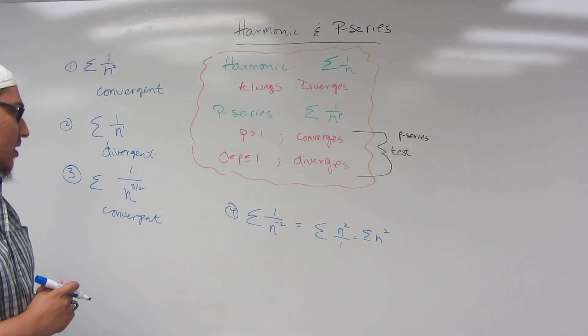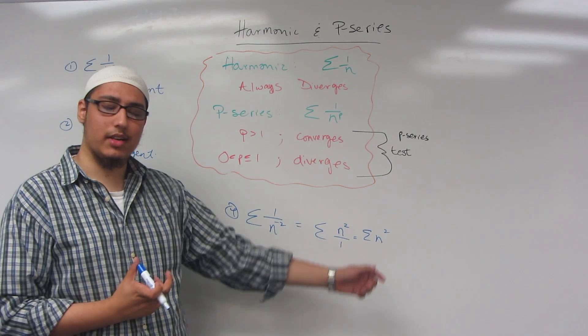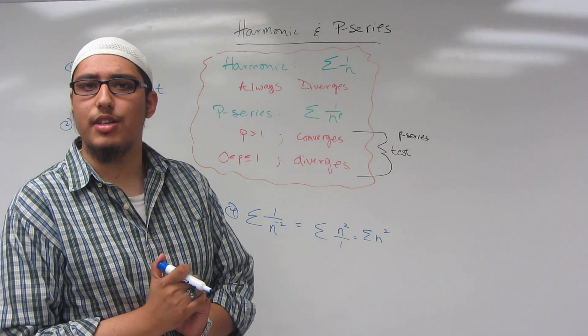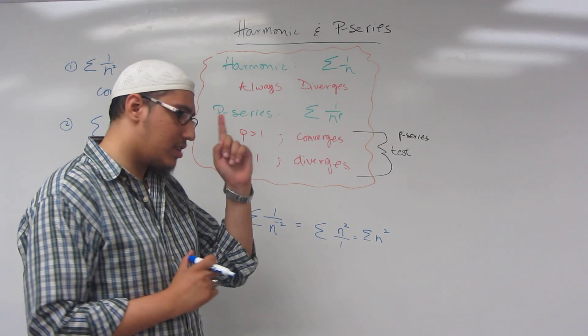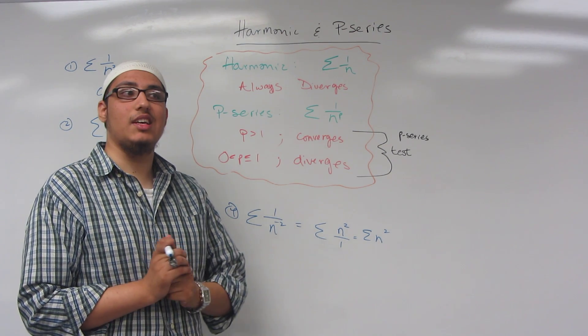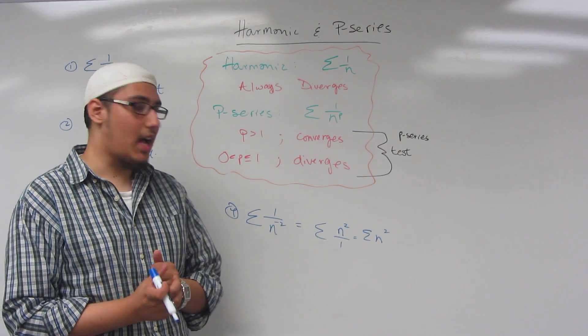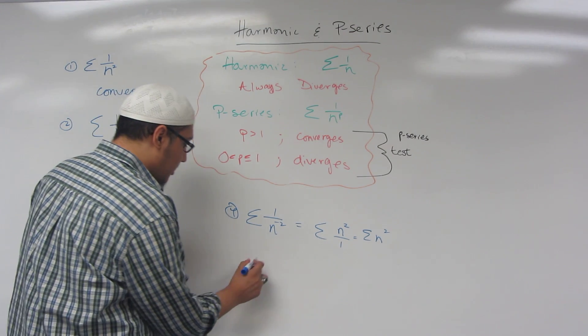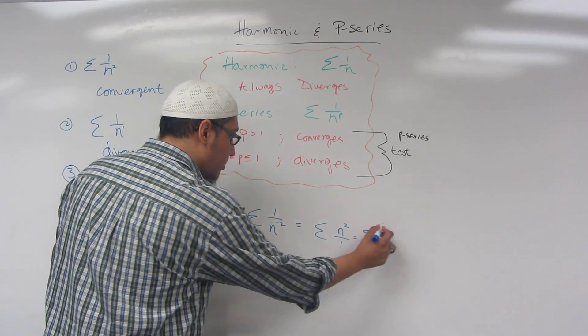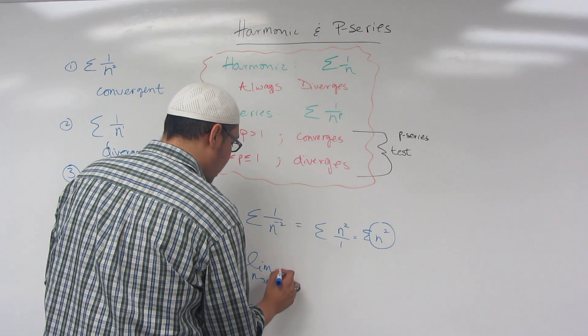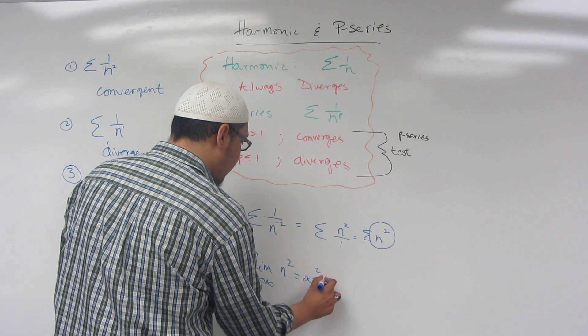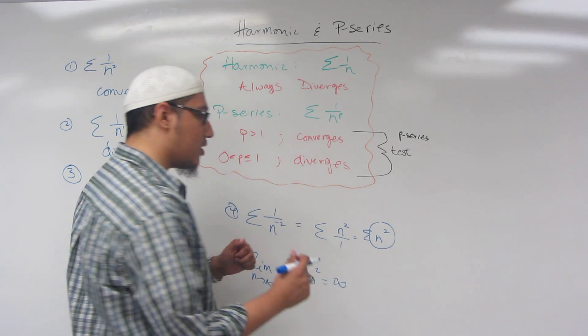Now, sigma n squared looks nothing at all like a p-series. So how can we treat this series? Well, our first test always, whenever we can't identify the series, is the nth term test for divergence, which simply states the limit n approaches infinity of this term here, of this a sub nth term of n squared. And what does this equal out to be? This infinity squared, or in other words, simplifies down to infinity.